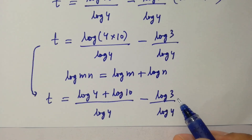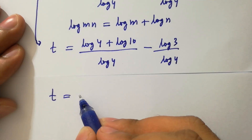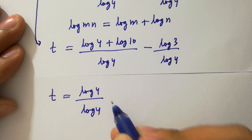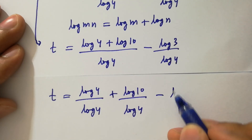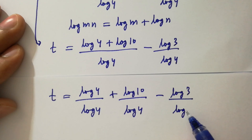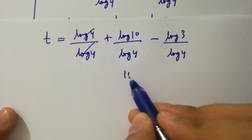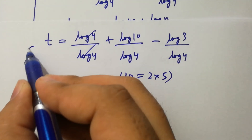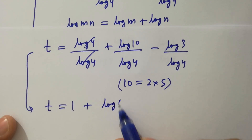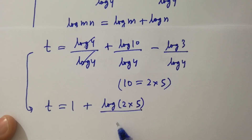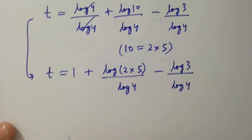Since log m times n equals log m plus log n, we can write t equal to log 4 plus log 10 over log 4 minus log 3 over log 4. As log 4 over log 4 cancels, and 10 equals 2 times 5, it becomes t equal to 1 plus log 2 times 5 over log 4 minus log 3 over log 4.